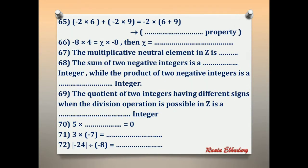Number 65: negative 2 × 6 + negative 2 × 9 = negative 2 × (6 + 9). We have two signs — plus and multiply. This property is called distributive.